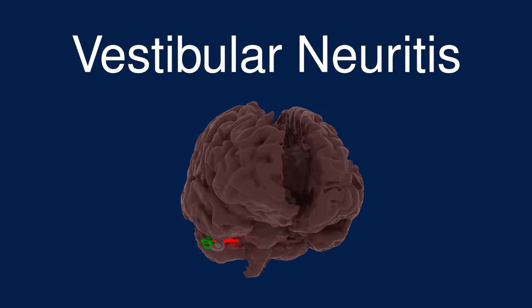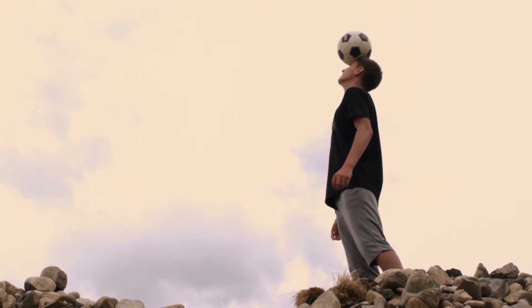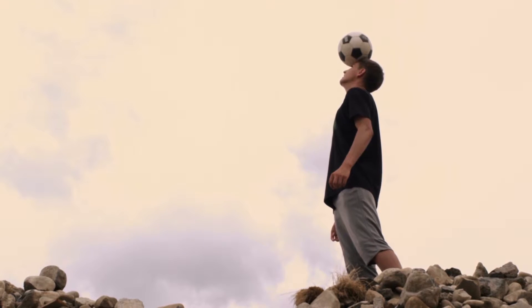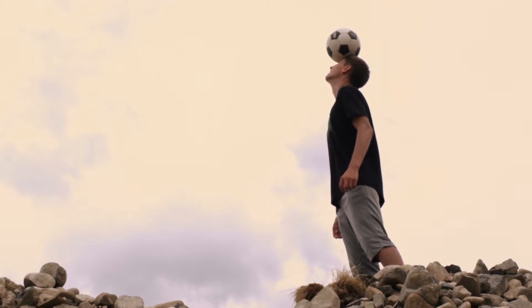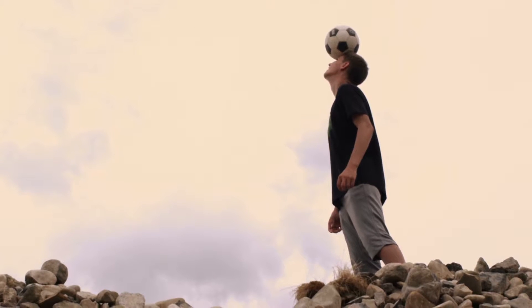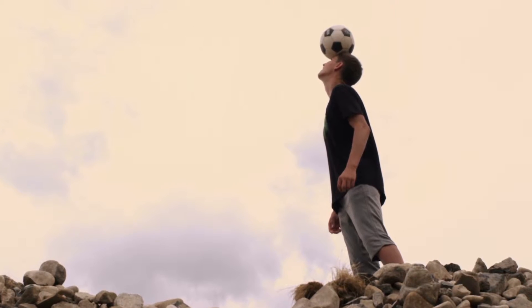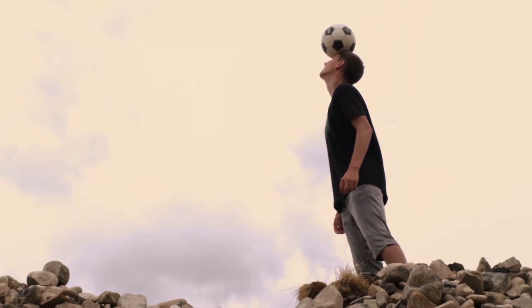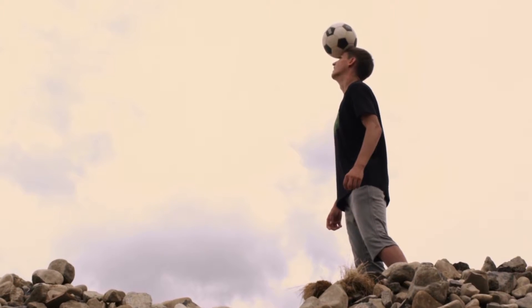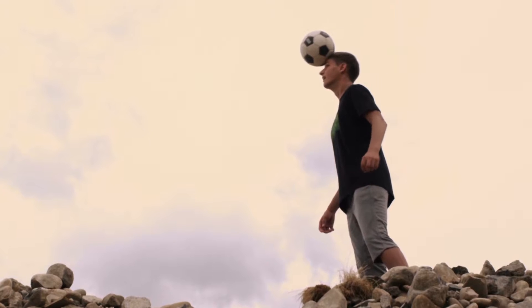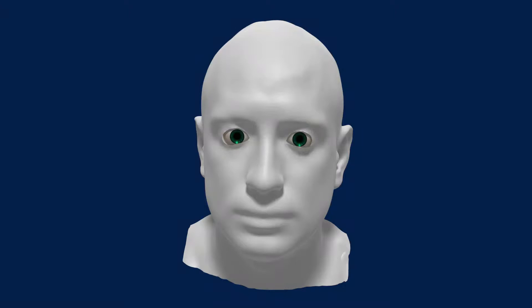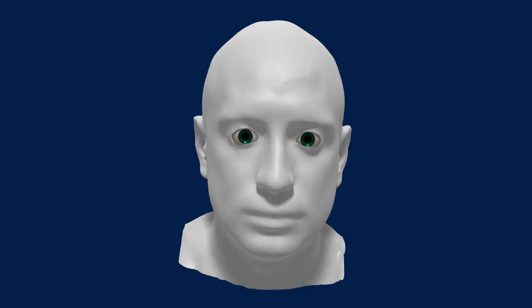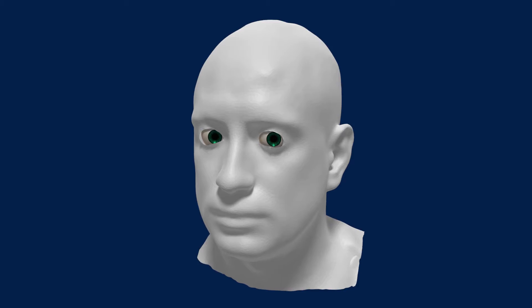A healthy vestibular system has two primary functions. The first is balance — along with the senses of sight and touch, the direct sense of head motion through the vestibular system allows the body to smoothly adjust posture as needed. The second function is vision stabilization.